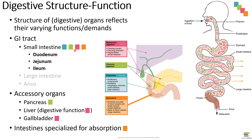In today's lecture, I'm really going to focus on the small intestine because it's the most complicated and the most interesting. I'll talk about the large intestine and the anus later, but the main conceptual focus will be on the small intestine and the accessory organs — the pancreas, liver, and gallbladder — that are secreting things into the small intestine to help with these functions. The small intestine is especially specialized for absorption.